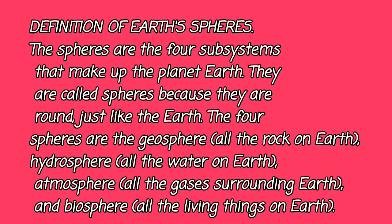Our living planet Earth. Definition of Earth's spheres. The spheres are the four subsystems that make up the planet Earth. They are called spheres because they are round, just like the Earth. The four spheres are the geosphere — all the rock on Earth; hydrosphere — all the water on Earth; atmosphere — all the gases surrounding Earth; and biosphere — all the living things on Earth.